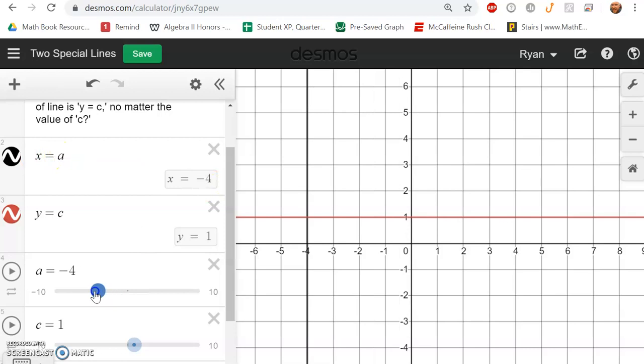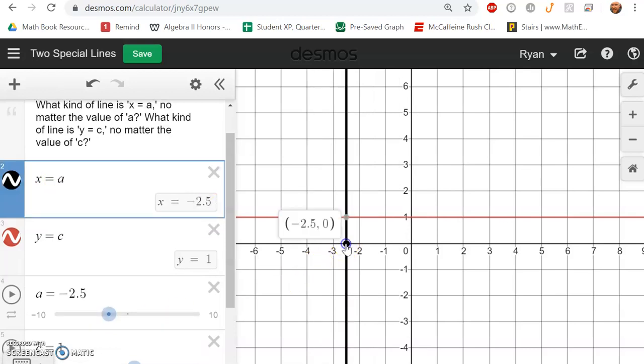And that vertical line passes through that number on the x-axis. The equation x equals negative 2.5 crosses the x-axis at negative 2.5 comma 0. And if I change the value of a and make it something else, like 1.